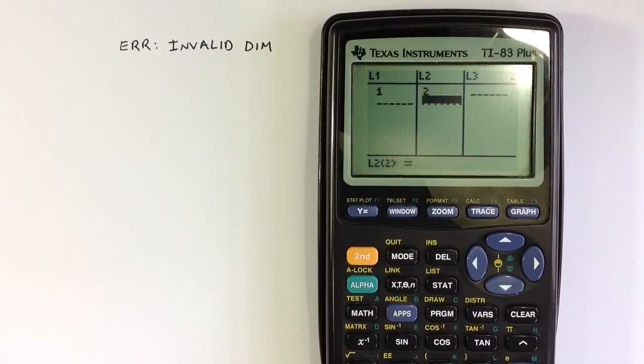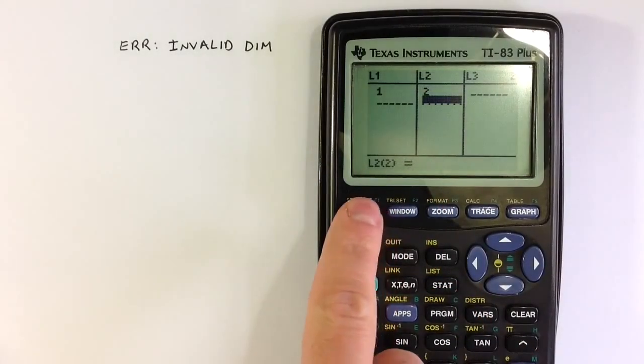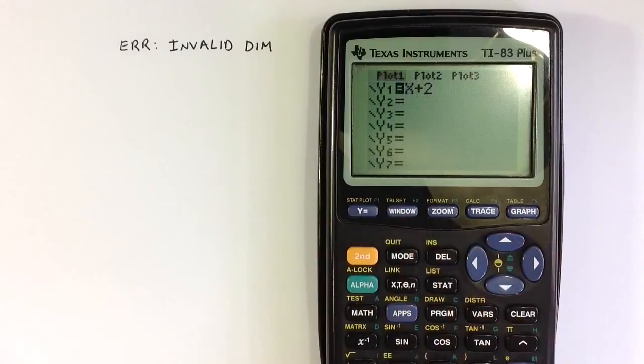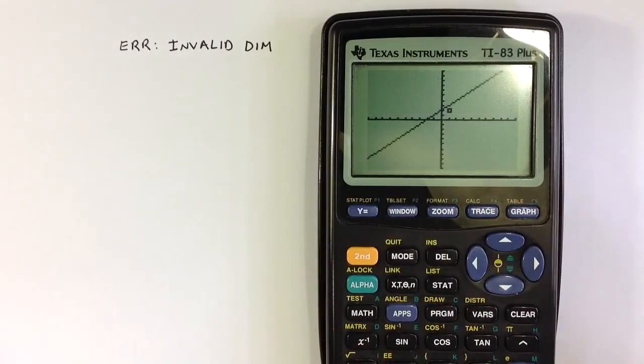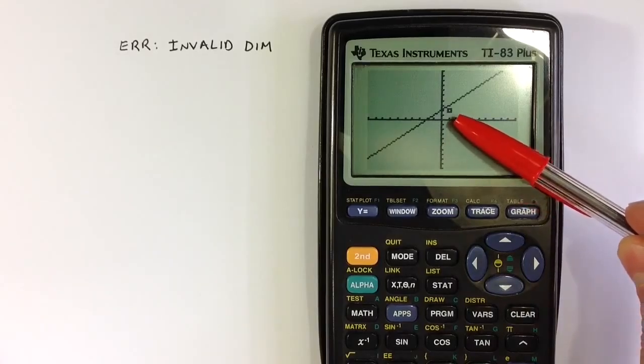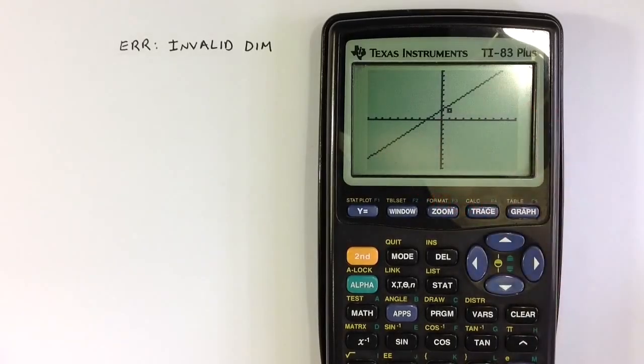If I enter a value in list 2, then going to the y equals menu, if I turn that plot 1 back on and hit graph, now I can produce both a scatter plot and the function graph at the same time.